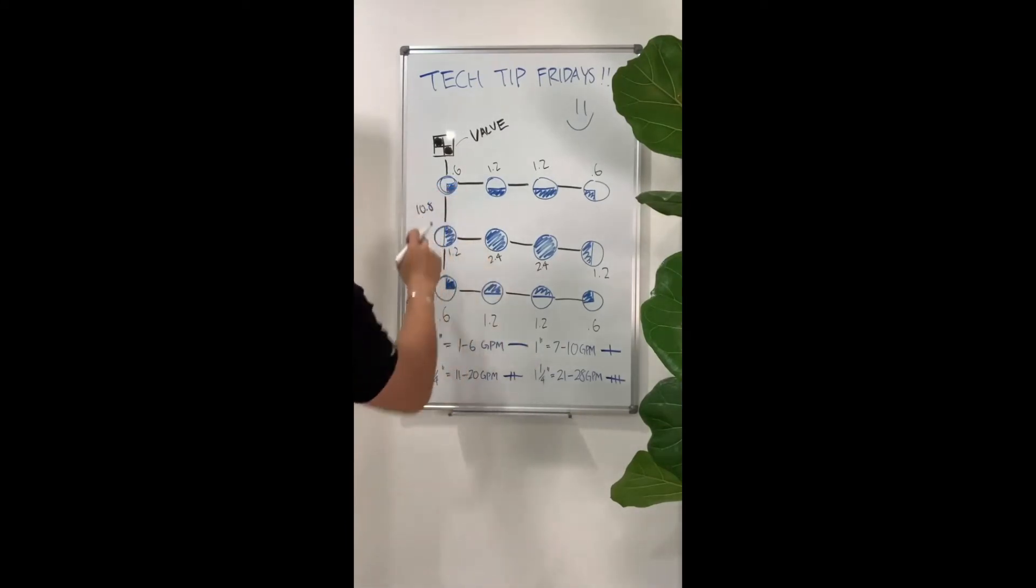Now if it's 10.8 GPMs, you see that 1 inch can do 7 to 10 and 1 and a quarter can do 11 to 20. So I always like to round up just to give ourselves some more wiggle room. So this section of pipe would be 1 and a quarter inch, which is two tick marks. So I'll go ahead and put two tick marks right there.